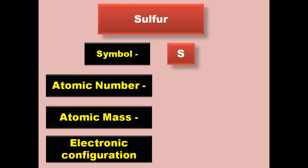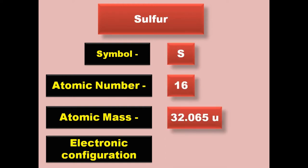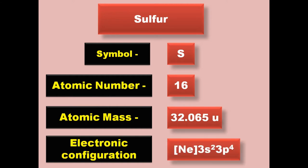Sulfur has symbol S, atomic number 16, atomic mass 32.065, electronic configuration [Ne] 3s2 3p4. Sulfur exists in solid form at room temperature.